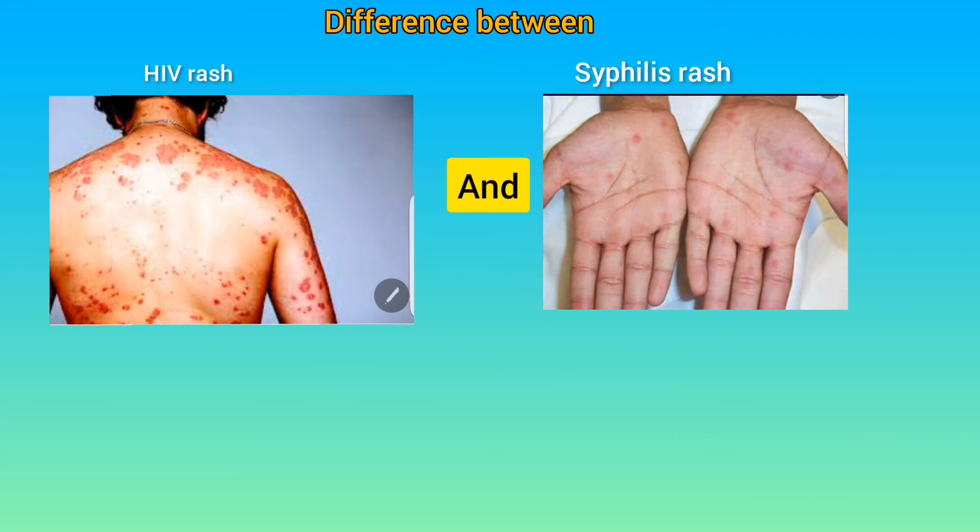The first difference between HIV and syphilis rash is on the way they feel. HIV rash is often itchy or painful, while syphilis rash is never itchy, making it difficult to be noticed.